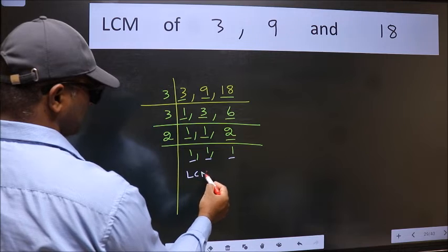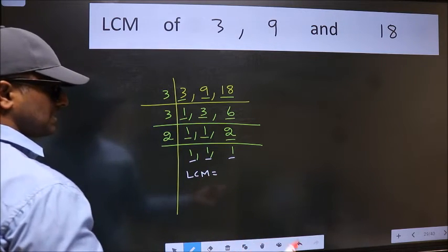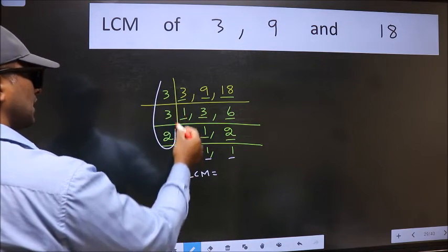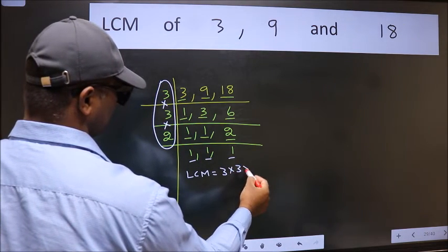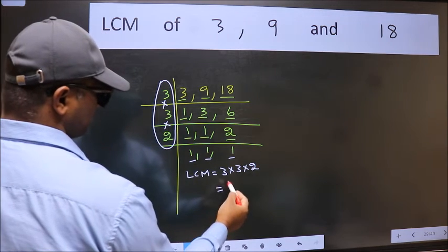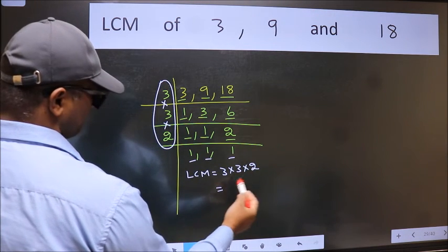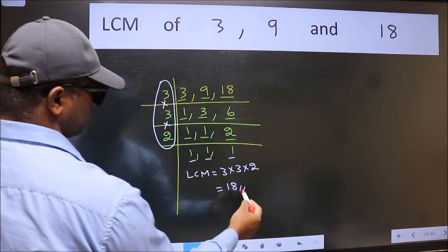So our LCM is the product of these numbers, that is 3 into 3 into 2. When we multiply these numbers, we get 18 as our LCM.